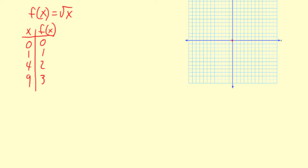So 0, 0 first coordinate, then 1, 1, then 4, 2, then 9, 3.